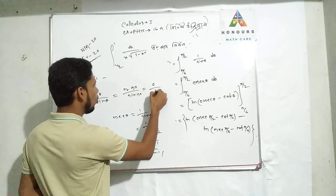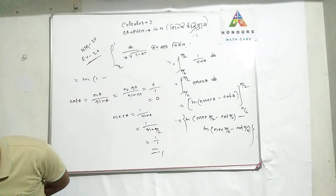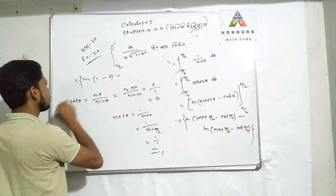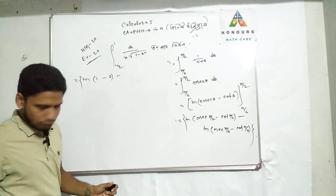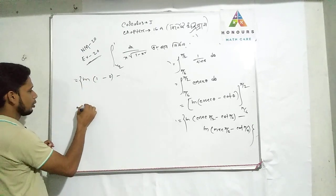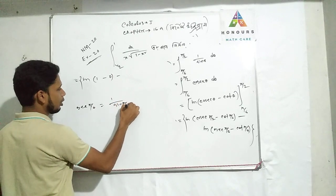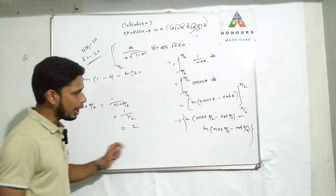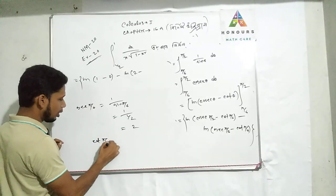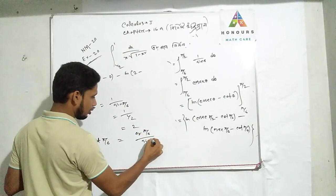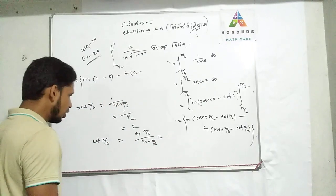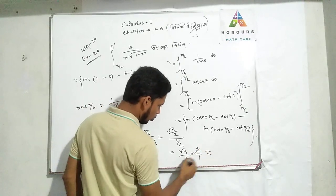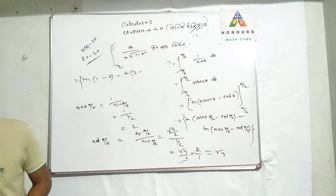So cos 90 equals 0. Then for the lower limit, sin 30 equals 1/2, so cosec 30 equals 2. And cot 30 equals cos 30 over sin 30 equals (√3/2) over (1/2) equals √3. So we get: (1 minus 0) minus (2 minus √3), which means 1 minus 2 plus √3, giving us ln(2 minus √3).